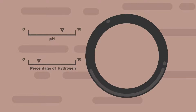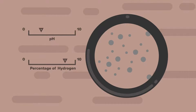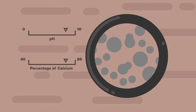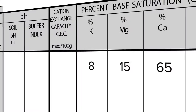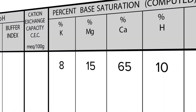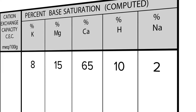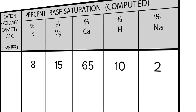Percent base saturation has a direct correlation to pH. If you have hydrogen showing up in those values, that's going to be an indicator that you have a lower soil pH. Conversely, if you see a lot of calcium in your base saturation, that's going to be an indicator that your pH is on the higher side. By simply looking at your percent base saturation, you can have a really good indicator of what nutrients you're going to struggle with as you look at your soil test.